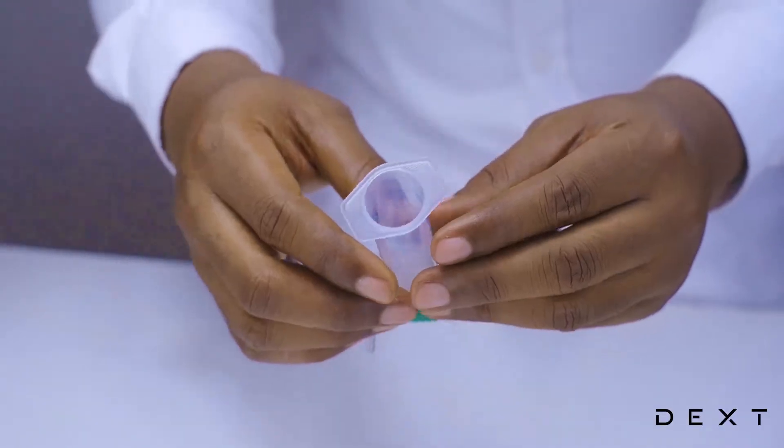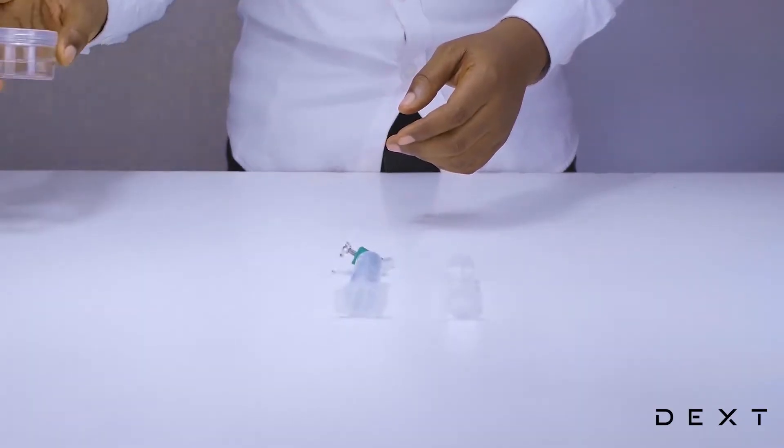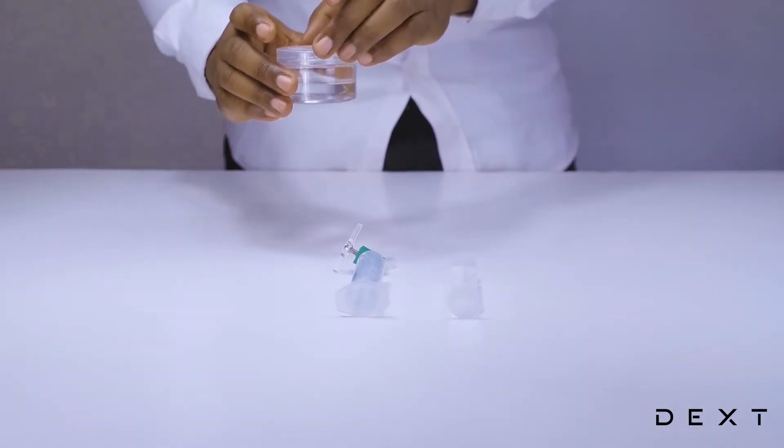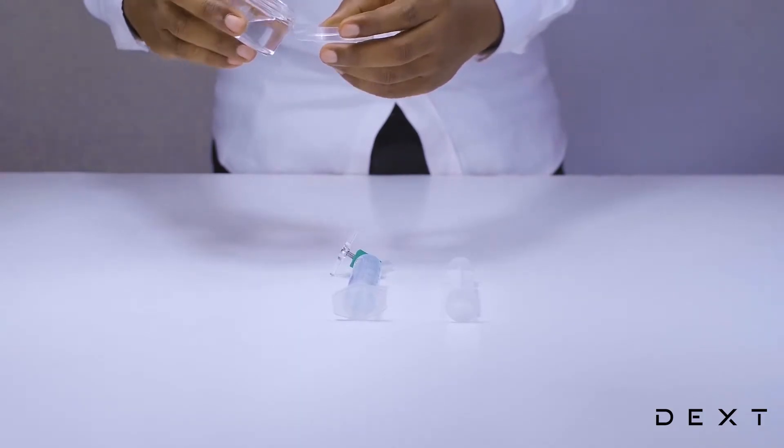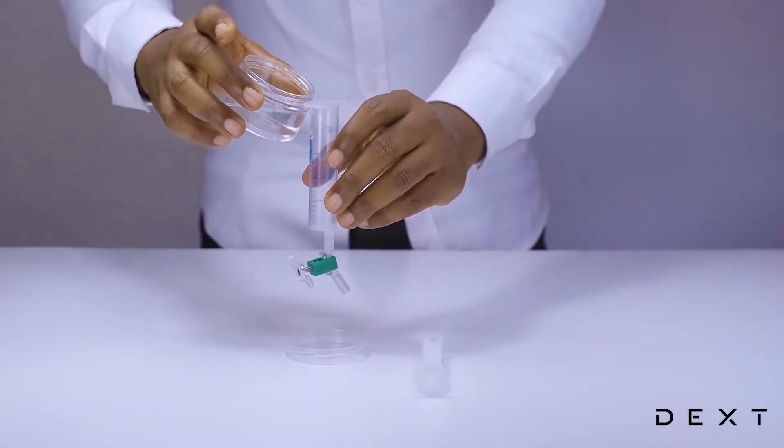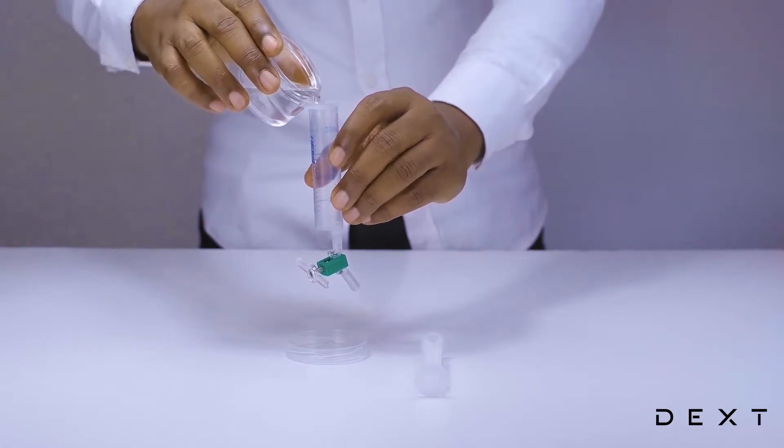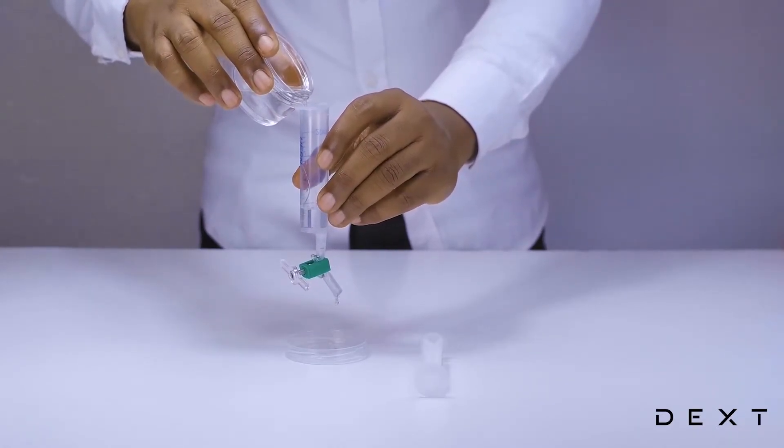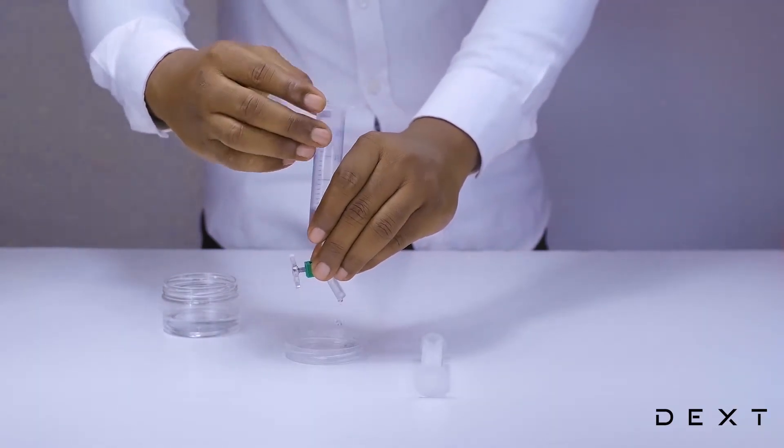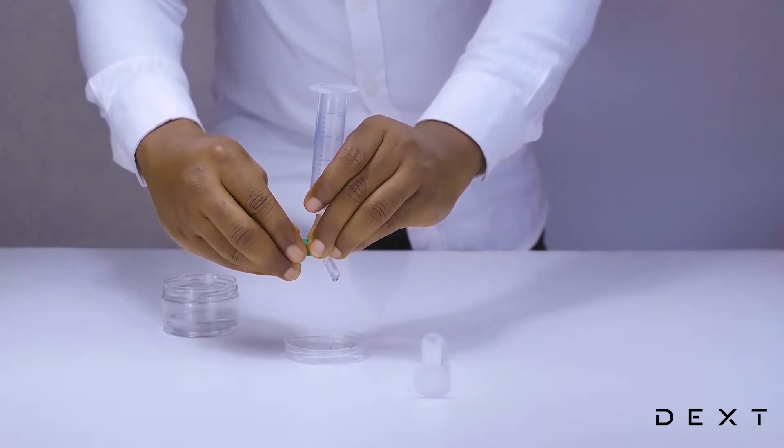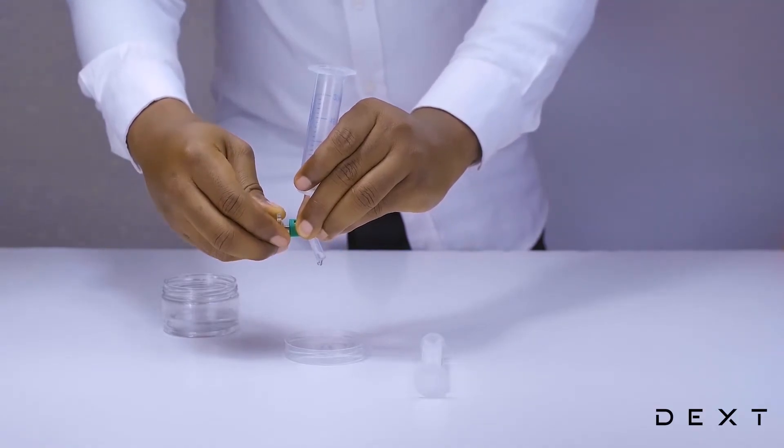The next thing we are going to do is to test our improvised separating funnel. We are going to do that by pouring just a little bit of water through it. We will gently pour some water. And it is very likely that you are going to see the water is dripping. No problem. We just tighten our tap a little bit more until the water stops dripping.